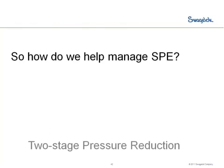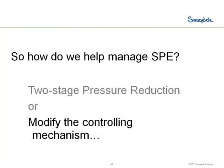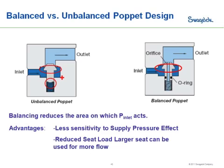The second way to manage supply pressure effect is to modify the control mechanism, which is really the interaction between the poppet and the seat internal in the regulator.